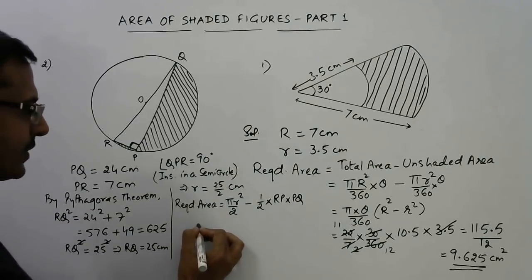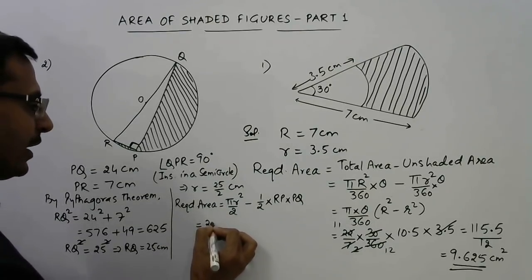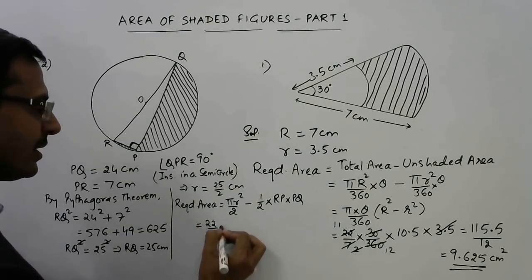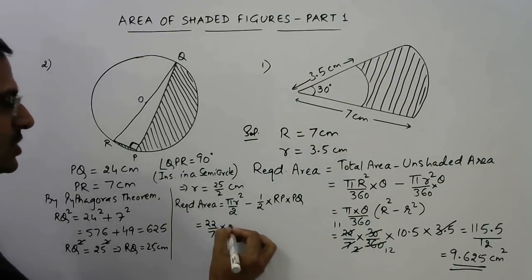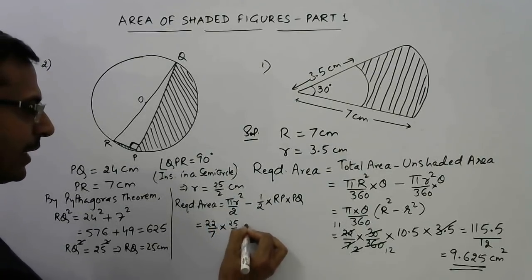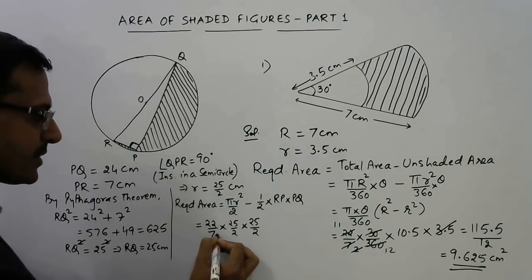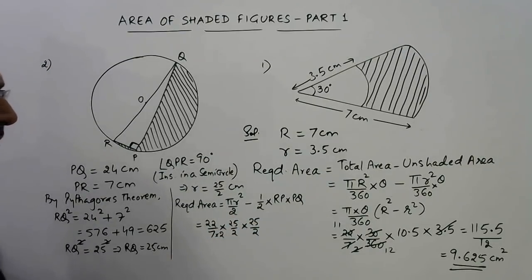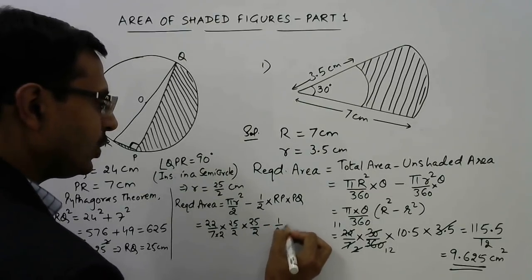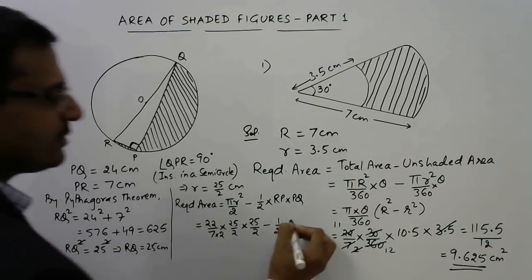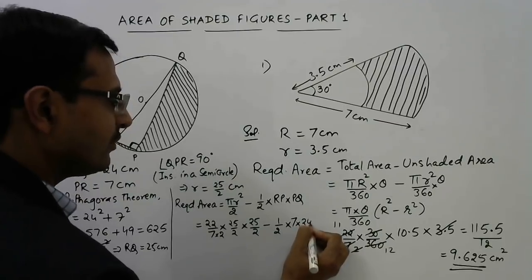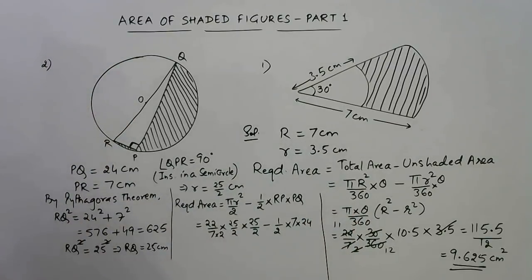I will substitute the values and then you can solve the remaining part. 22/7 × radius, which is 25/2, and another 25/2 because it is squared, and this 2 comes in the denominator. Minus 1/2 × 7 × 24. Now this is the calculation we need to do.